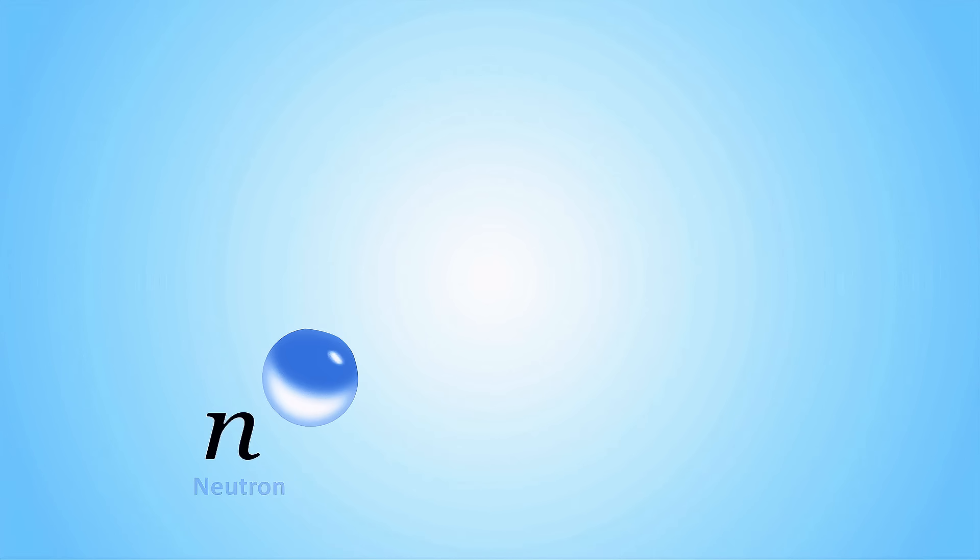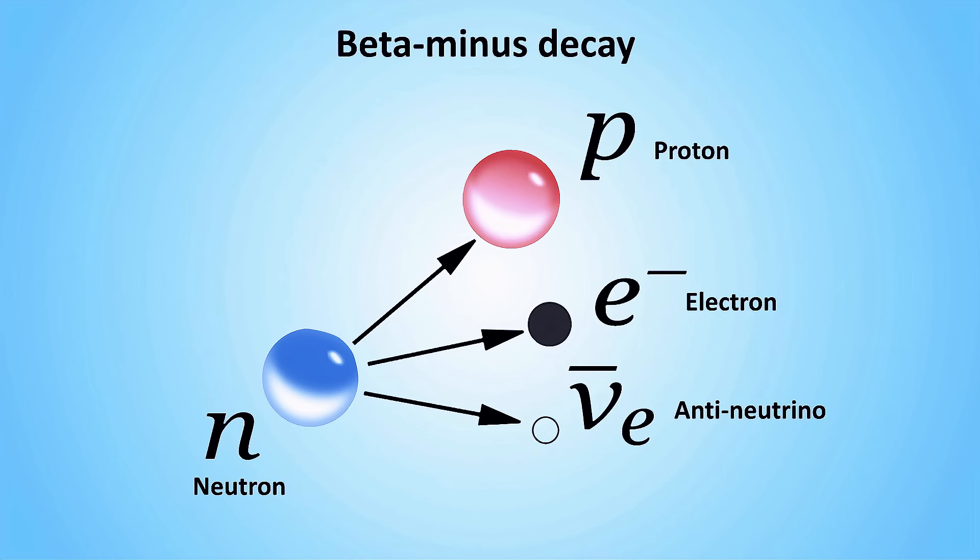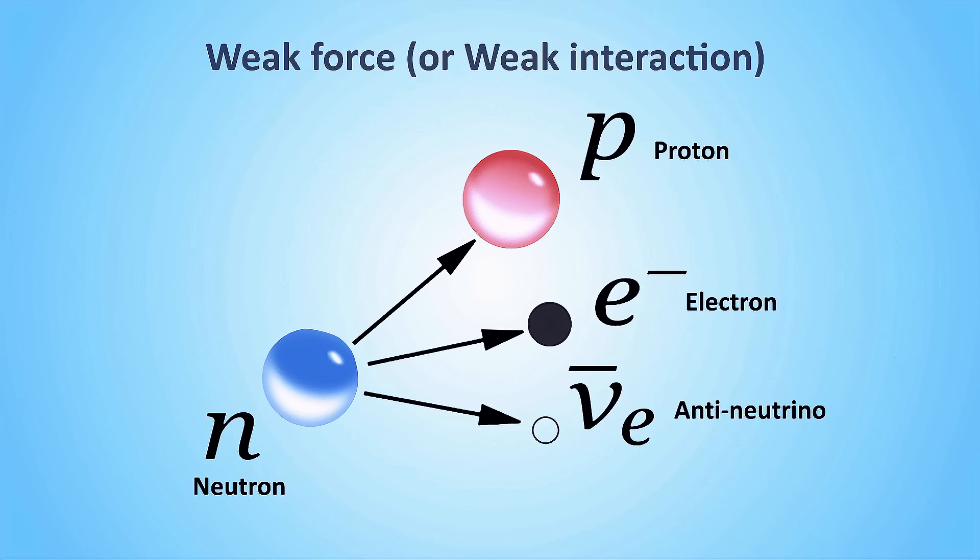However, the less common beta decay, where a neutron transforms into a proton while emitting an electron and an anti-neutrino, cannot be explained by these two forces. At first sight, the emission of an electron might look like an electromagnetic process, but the involvement of the neutron and neutrino, which are not electrically charged, means that this decay is instead the result of a whole new fundamental force. That force is called the weak force.